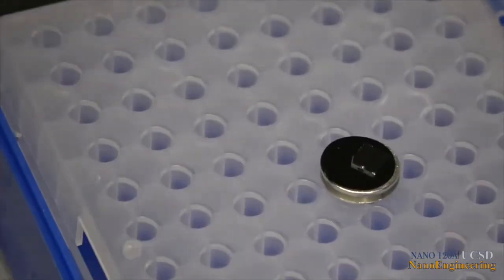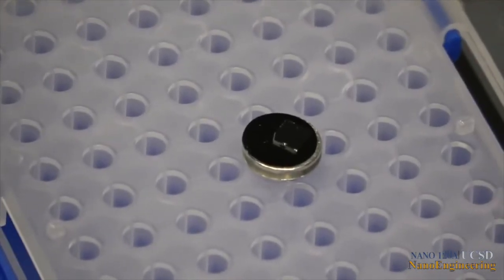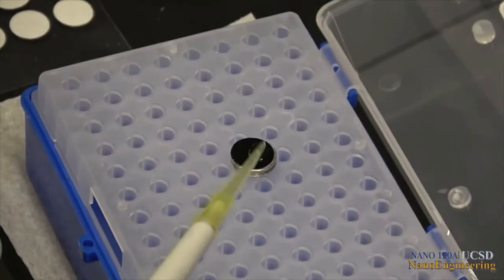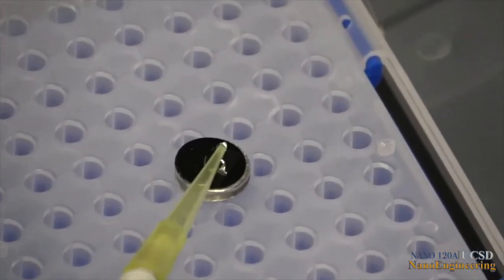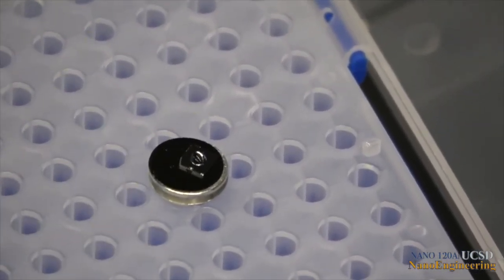Using a pipette, place a drop or two of your colloid on the surface of the silicon. Allow the liquid to dry completely before inserting the sample into the SEM. All samples must be totally dry prior to insertion into the SEM.